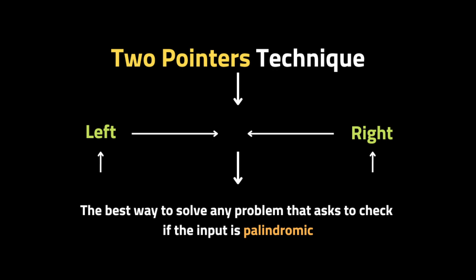The easy way to solve this problem is by using the two-pointer technique. The two-pointer technique is a method of iterating over elements using two pointers that move towards each other until they meet. It is the best way to solve any problem that asks to check if the input is palindromic, and it runs in linear time complexity.